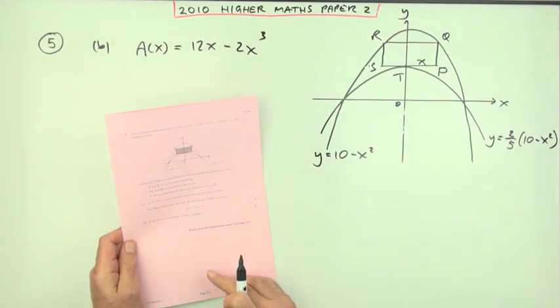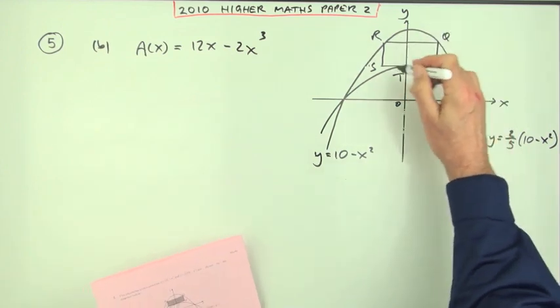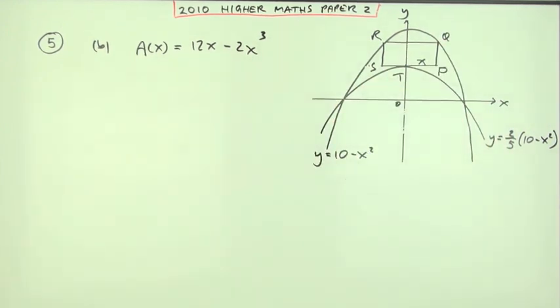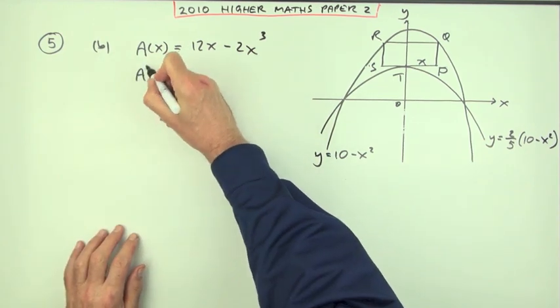Now part B simply says, for 6 marks, what's the maximum area of this rectangle? The rectangle which has this expression for its area. Well, it depends on x. So first of all, get the derivative.